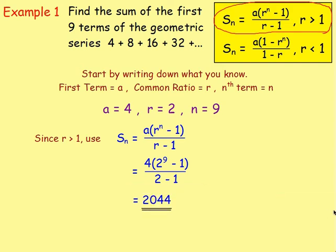And you end up getting 2,044 — meaning the sum of the first 9 terms of that geometric series is 2,044.